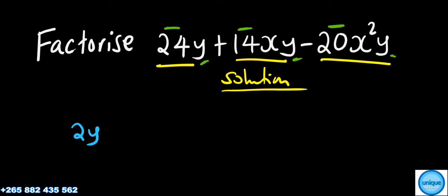So now we are going to solve this problem. 2y is common so 2y, 24y divided by 2y is 12, then you have plus, 2y divides into 14xy to get 7x, then minus, 2y divides into 20x squared y to get 10x squared.